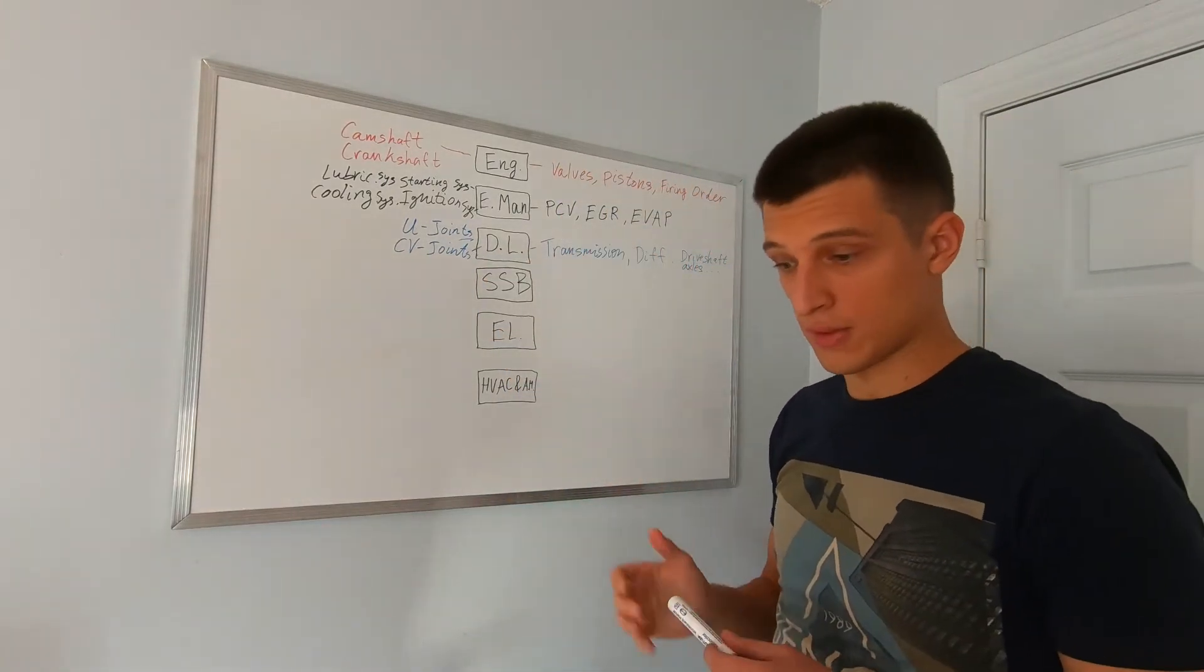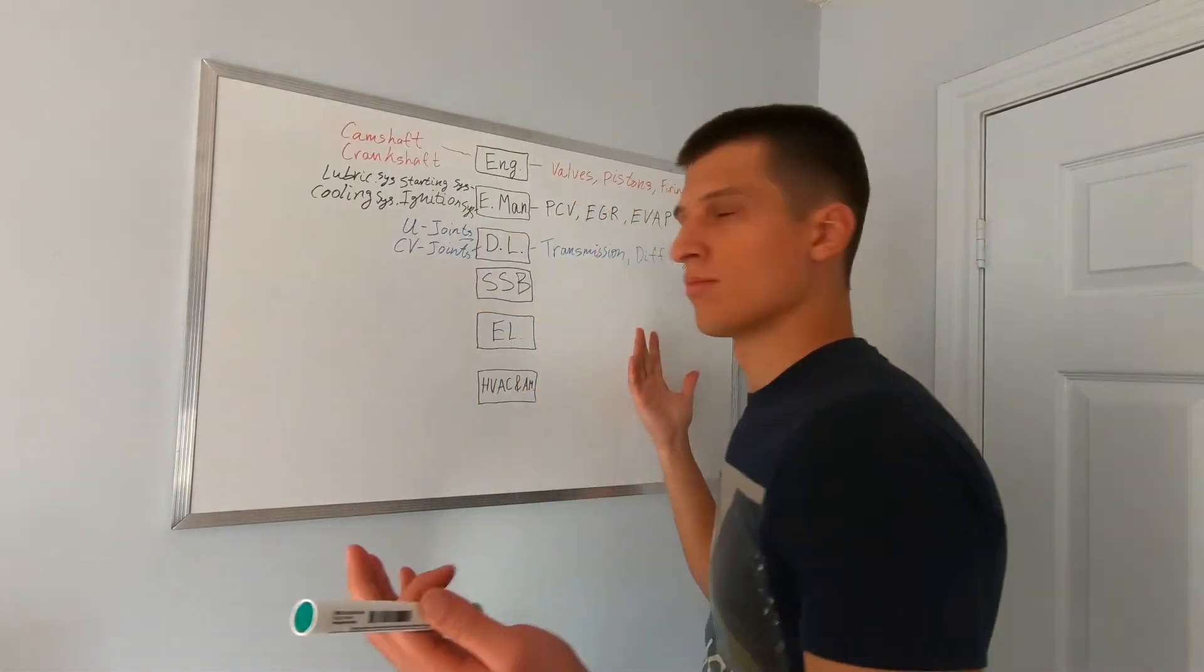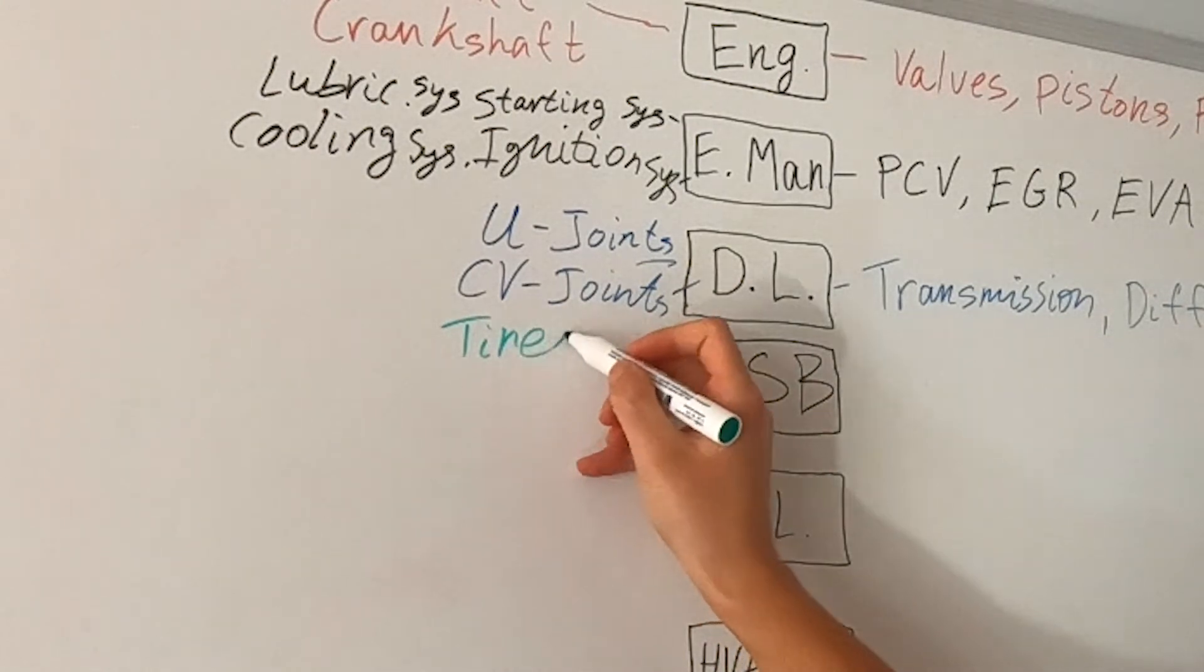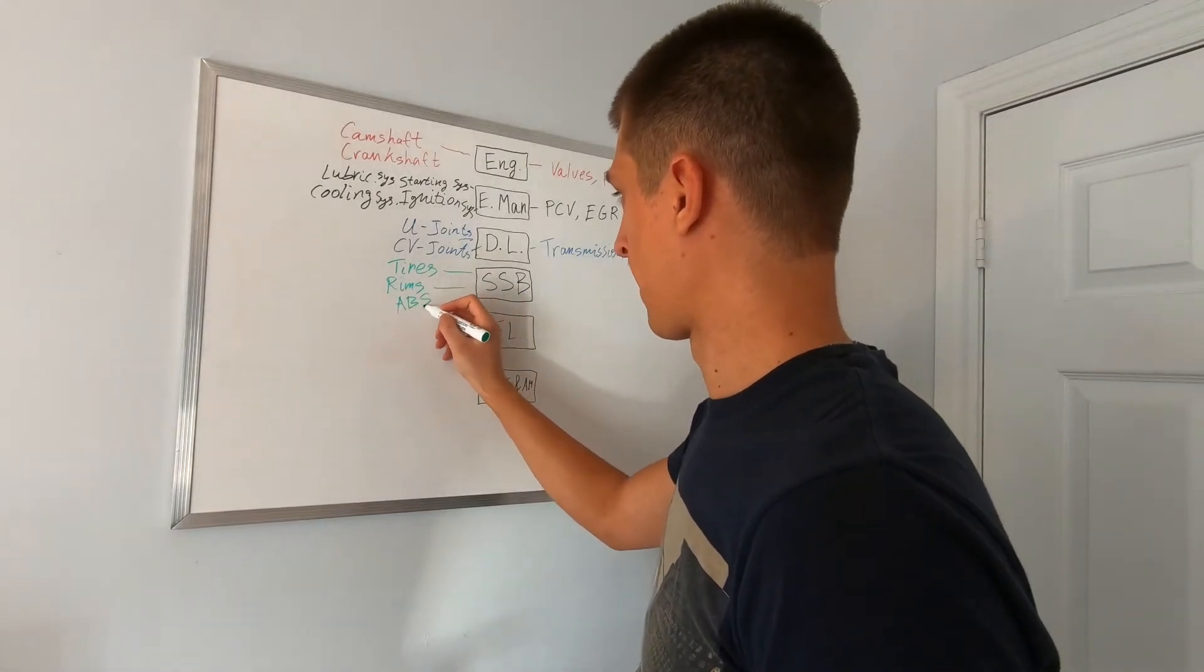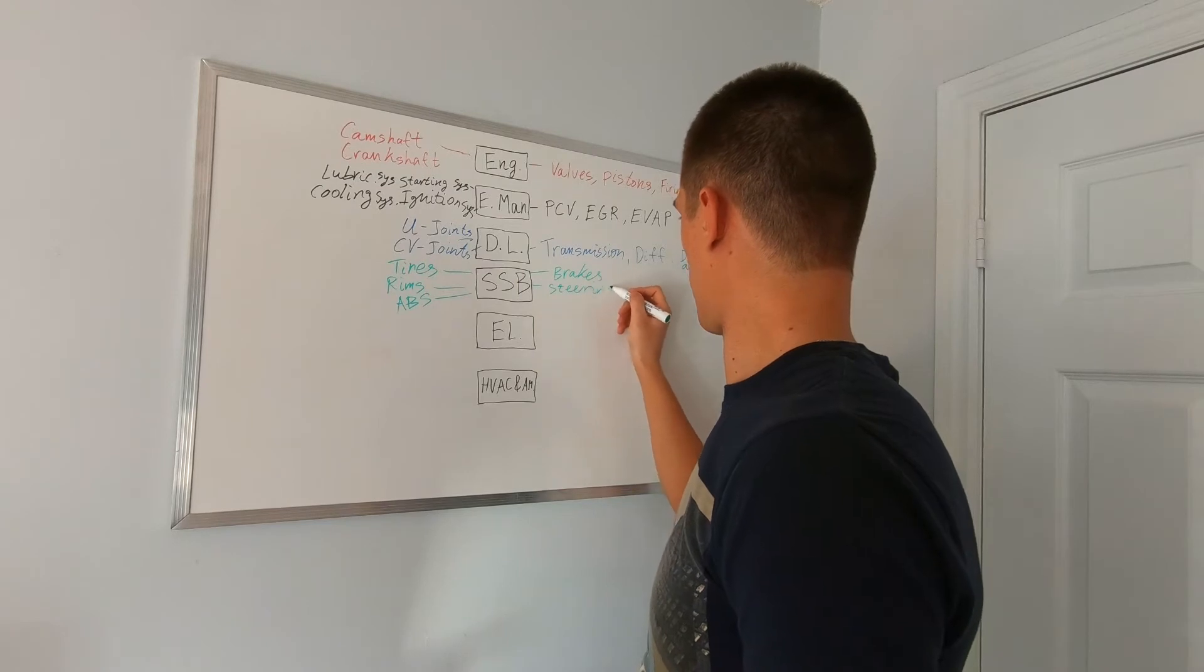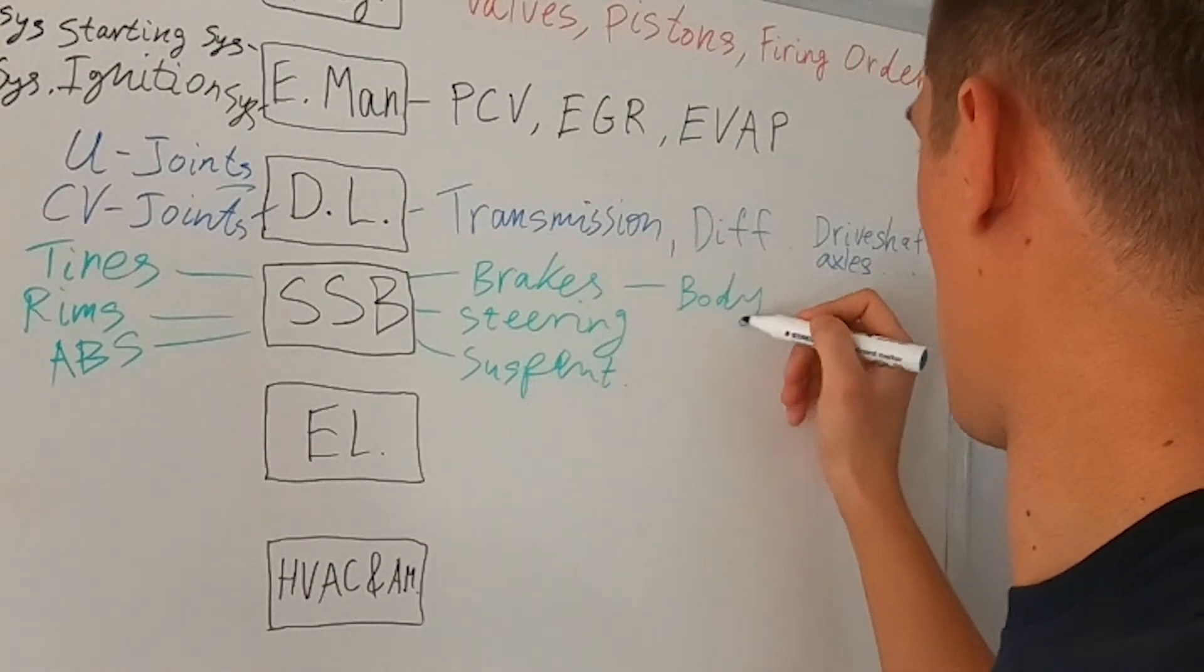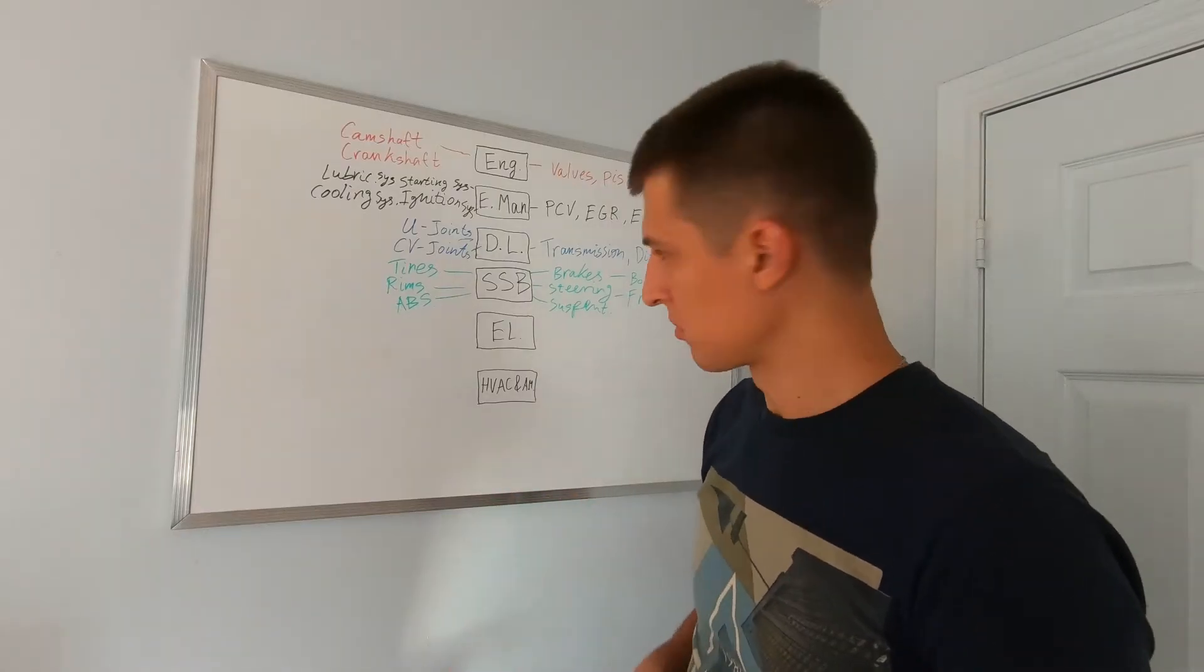Next category is SSB - steering, suspension, and brakes. Obviously we'll have all those three components. I'll be talking about steering assist, electric power, you also have your tires, rims, ABS, brakes, steering, suspension. It's also the body of the vehicle and the frame, the structural integrity of the whole car.